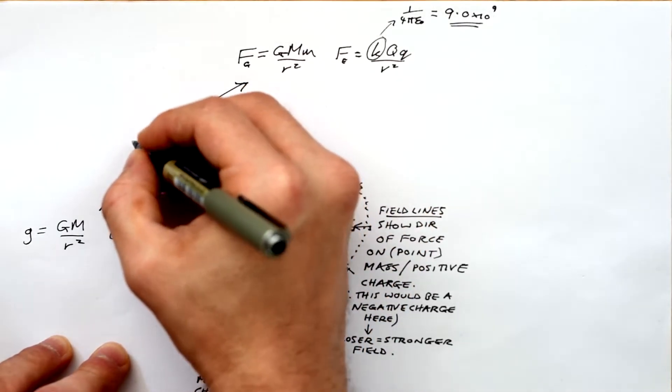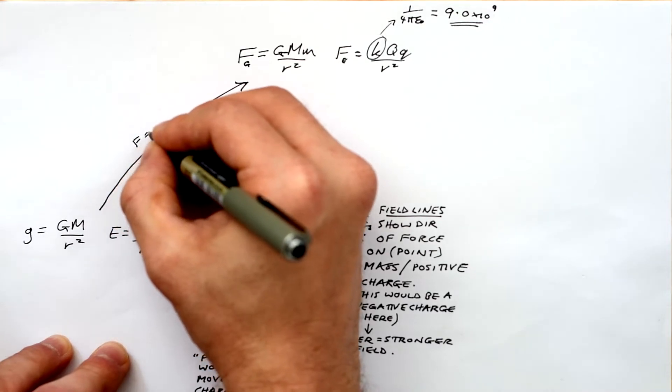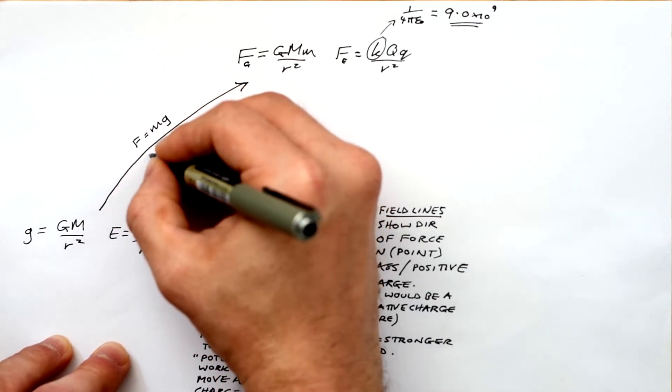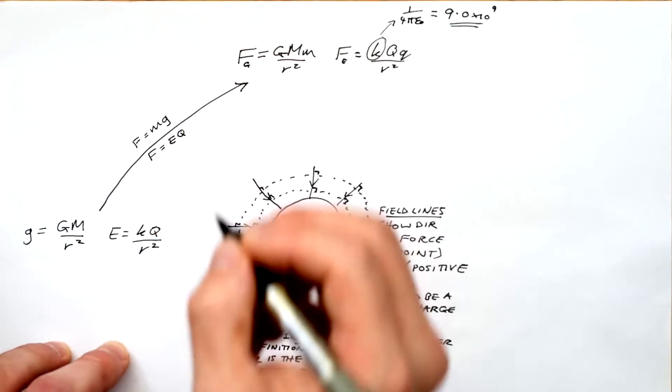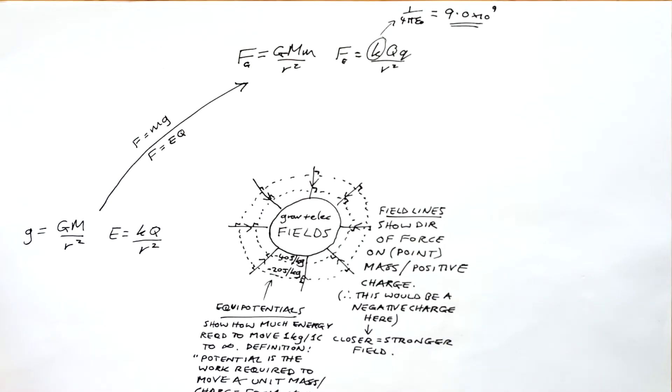So field strength shows you what the force is for one kilogram or one coulomb. And then to get to the actual force from there, all we have to do is times by m. That's why force is equal to mg. And F equals Eq for electric.